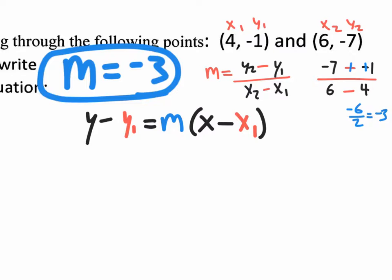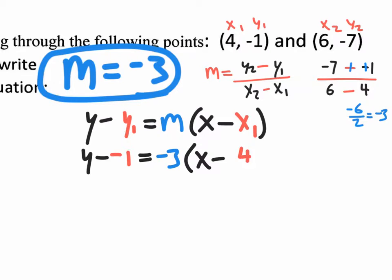Since the formula has x1 and y1, we're going to use the x1 and y1 from our labeled points. So we go: y minus y1, which is negative one, equals m, which is negative three — we just found that — times (x minus x1, which is four). Then the only other thing we need to do is change the minus minus to plus plus.